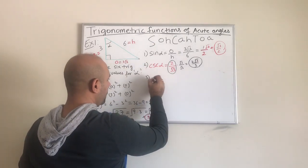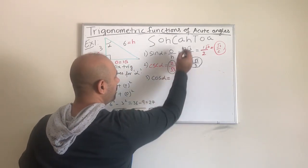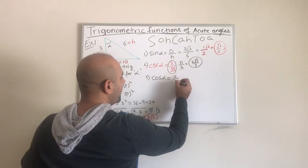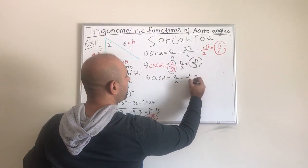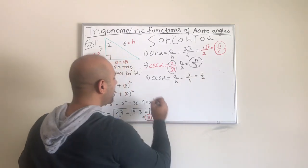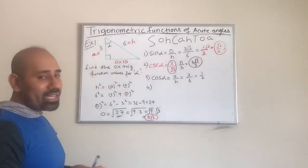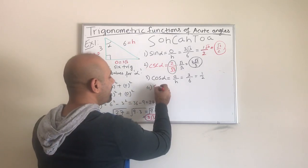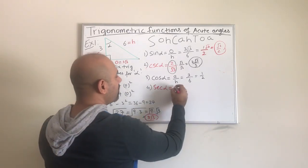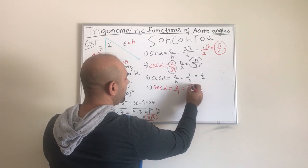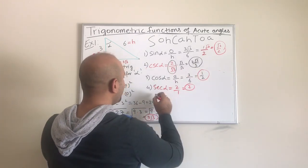Let us move on to the cosine of alpha. Cosine is adjacent over hypotenuse. Adjacent is 3 and hypotenuse is 6, so simplifying gives us one half. The secant is just the reciprocal of the cosine, so it is going to be 2 over 1, or simply 2.